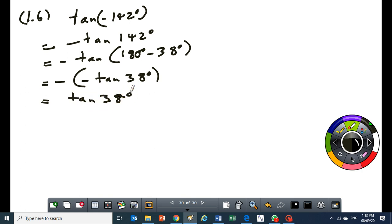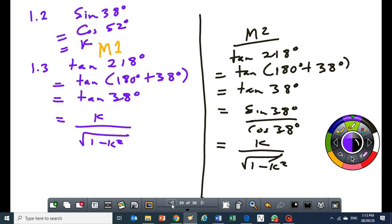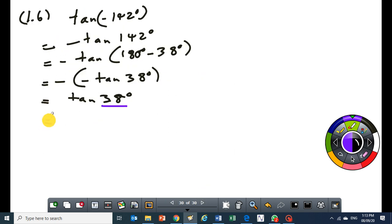The thing that we have got this 38 and this 38 degrees is on the diagram, it makes things very easy. Now, check this. The previous question, we got as far as tan 38. So, it means the answers are the same. For 1.3 and 1.6, the answers are the same. So, I just write that. K divided by the square root of 1 minus K squared.